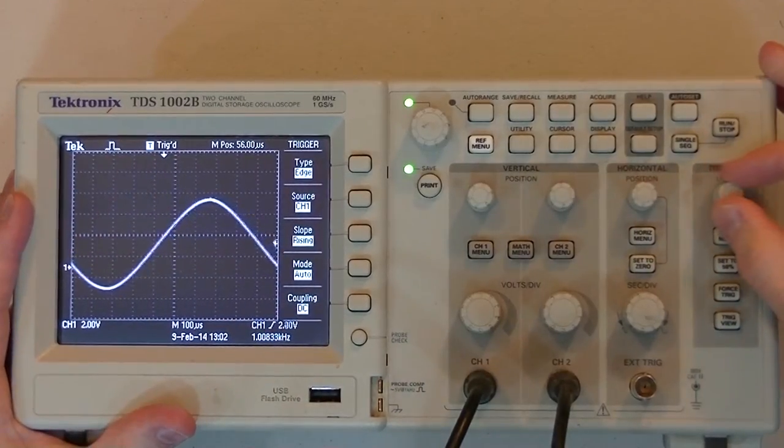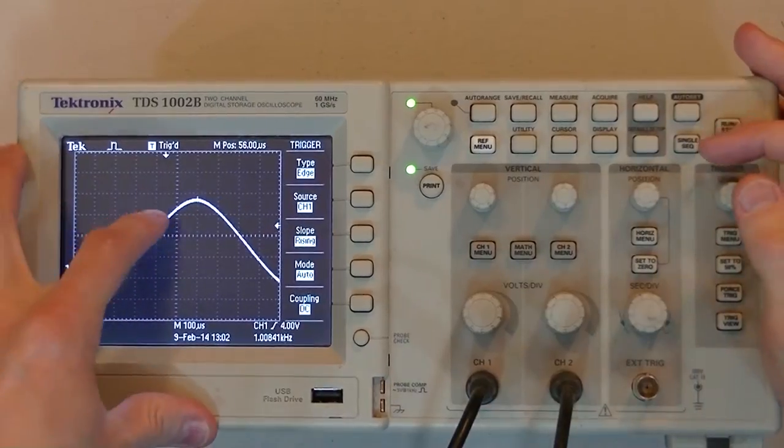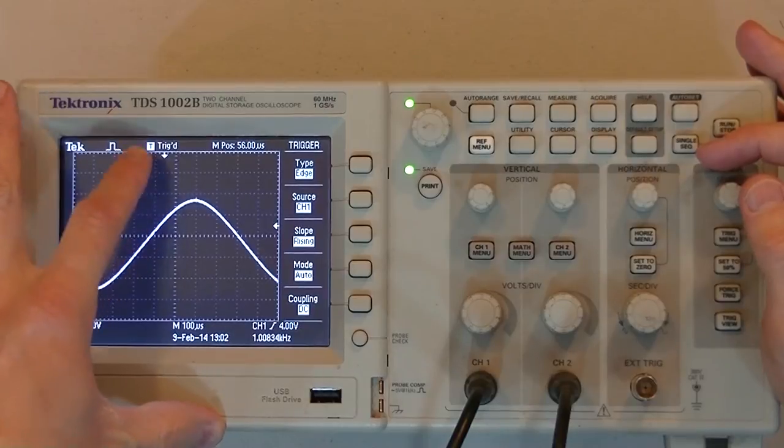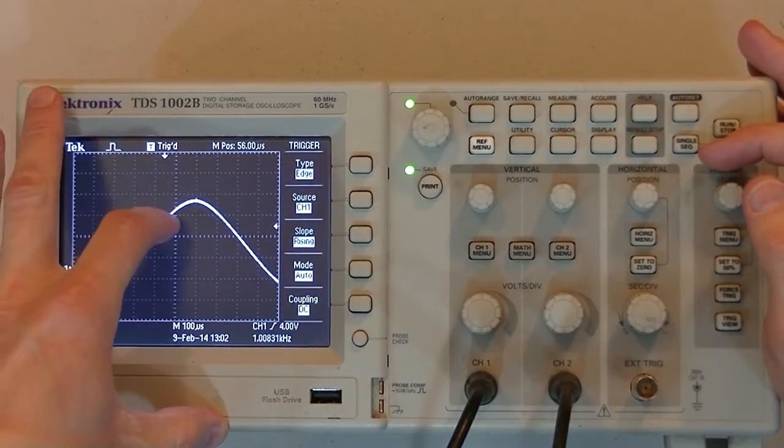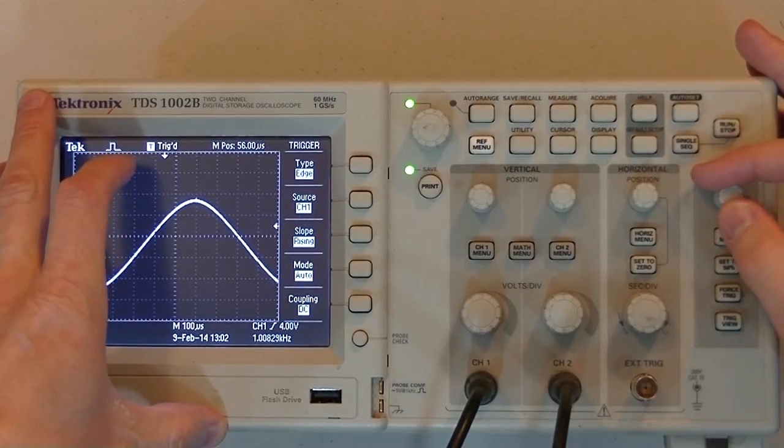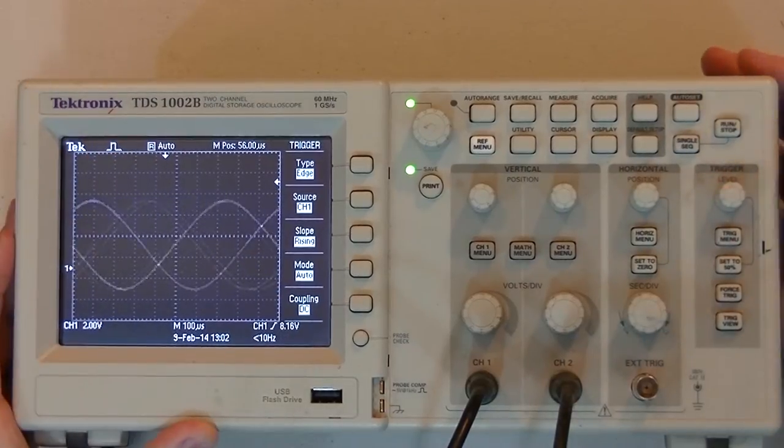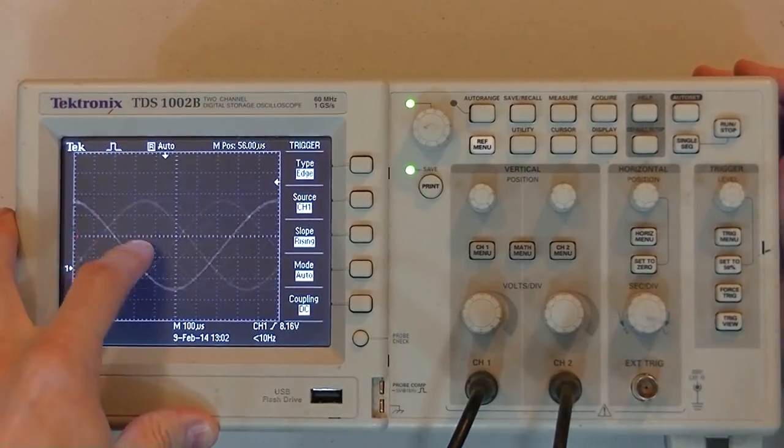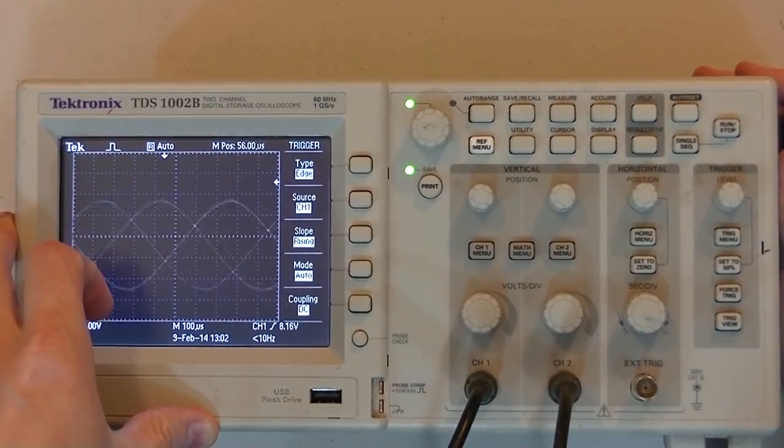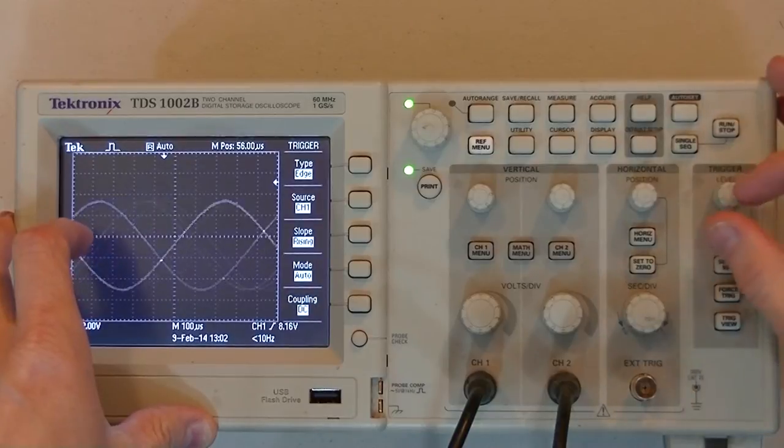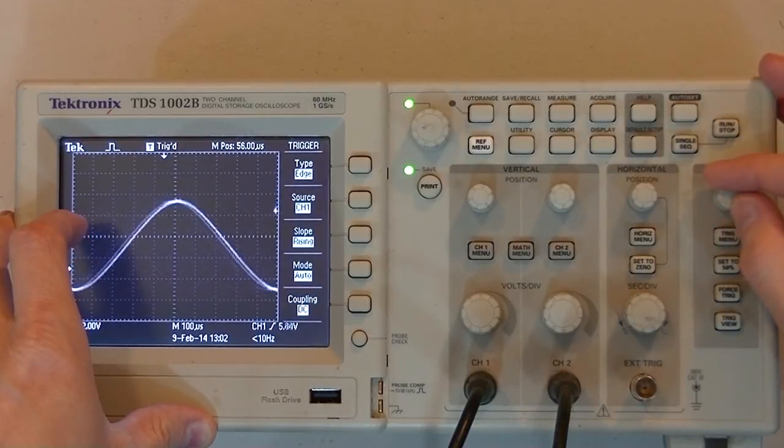So, I can adjust this up and down. If I adjust my trigger to, you know, this level here, then now it's still triggering at this point, but at this level. If I bring it up even farther past the waveform, it just doesn't know what to do. And this would be what you'd see if it just doesn't know what to trigger on.